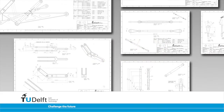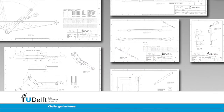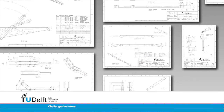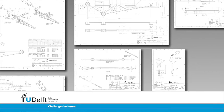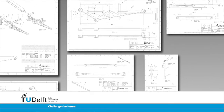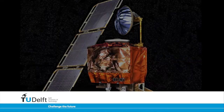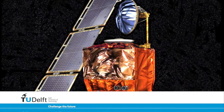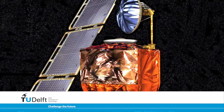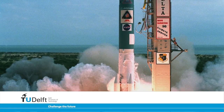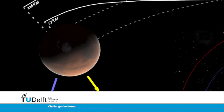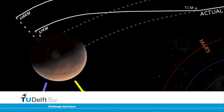Every engineer who is used to working with the metric system will expect a drawing to be dimensioned in millimetres if no specific exception is made in writing on the drawing. Unit conversion mistakes can lead to catastrophic consequences, like the Mars orbiter which was lost by NASA in 1999 due to different teams using different units for their calculations.